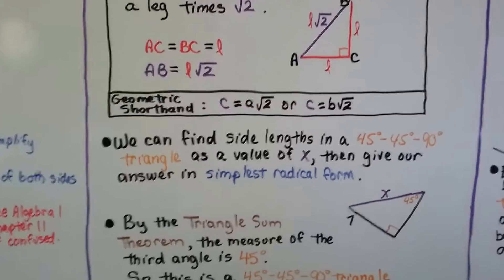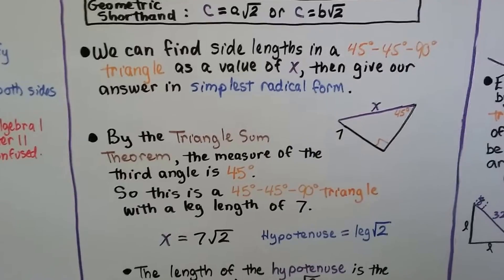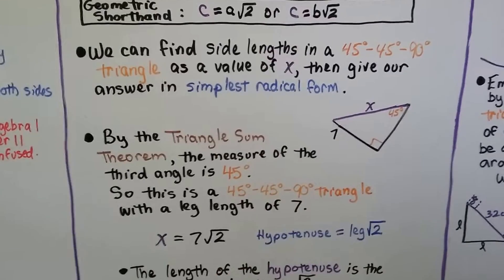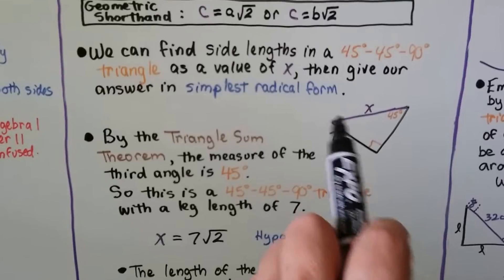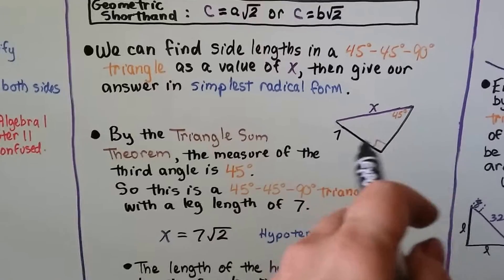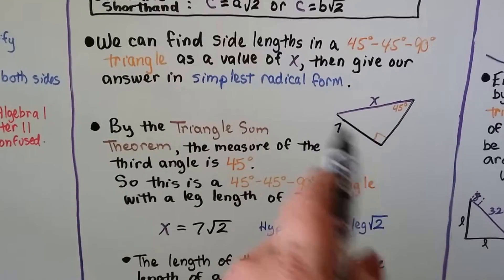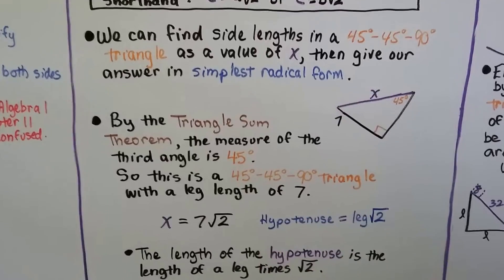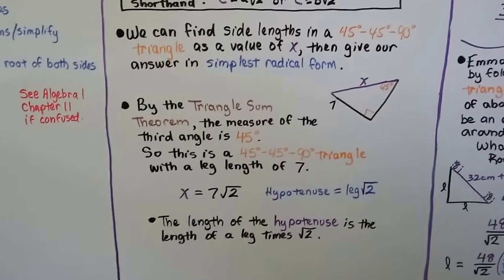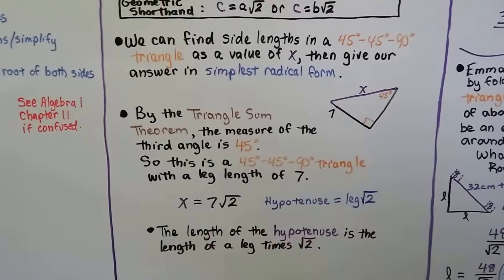We can find side lengths in a 45-45-90 triangle as a value of x and give our answer in simplest radical form. Here we have a 90-degree angle and a 45-degree angle, so by the triangle sum theorem the third angle is also 45 degrees. This is a 45-45-90 triangle with a leg length of 7. The legs are congruent, so both legs are 7. According to the theorem, the hypotenuse equals the leg times √2, so x = 7√2.